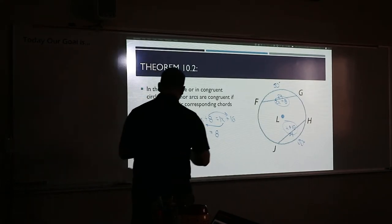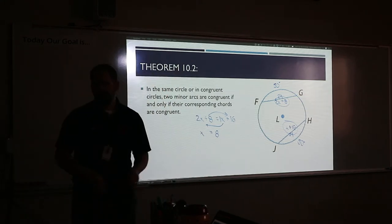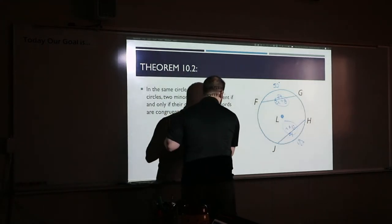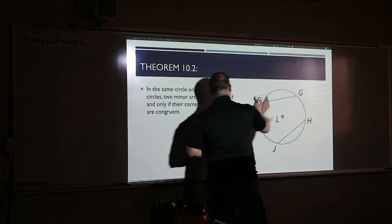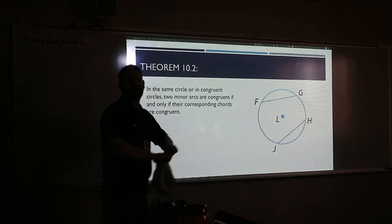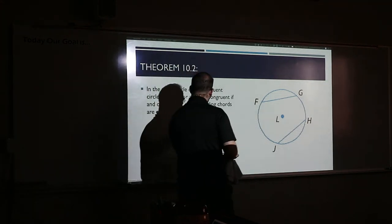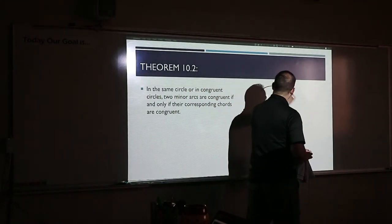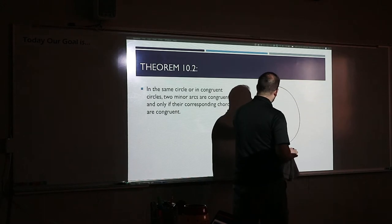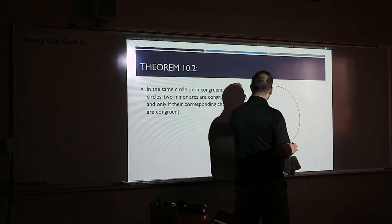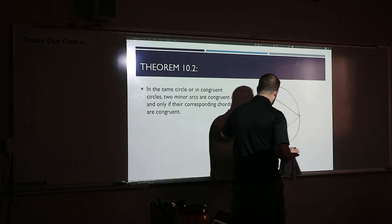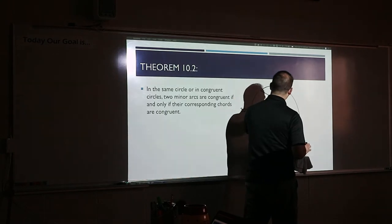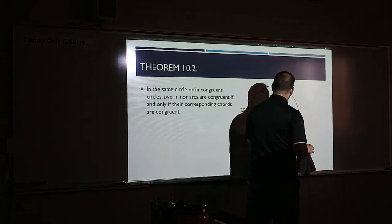Let me give you a different type of problem. There was one in the book I really liked — the way they had it drawn. It was something like: we had a circle with a center, two chords, and they said this arc was 200 degrees, with these lengths being 15 and 15. Let's call the points A, B, and D.